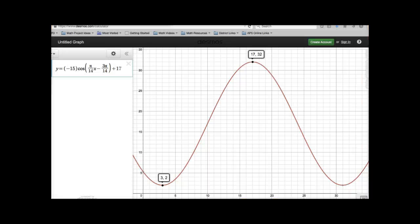In order to check my work, I went ahead and graphed my equation in Desmos. Notice that I distributed the pi over 14 into the parentheses in order to enable Desmos to graph this appropriately. But you can see here that our low, 3 over 2, is what we said. And here's our max. It's 17 over 32.